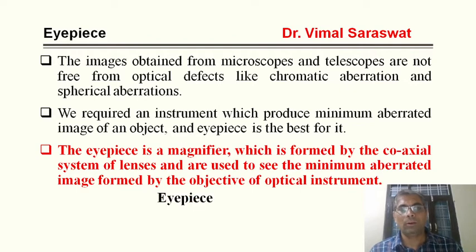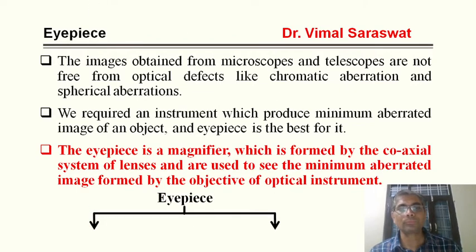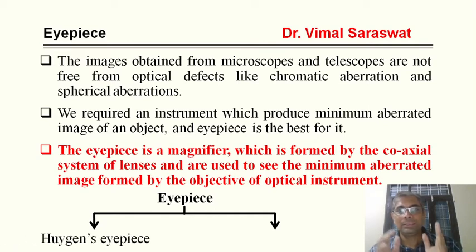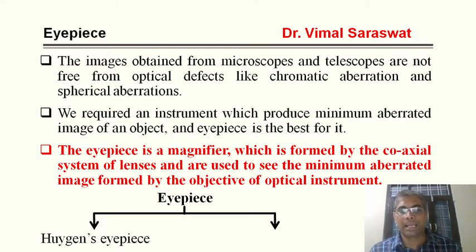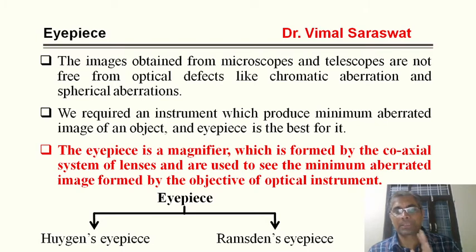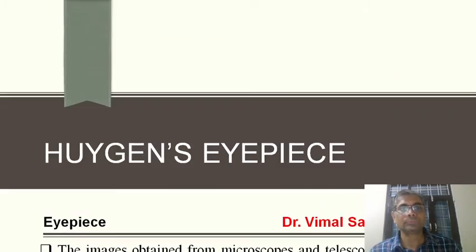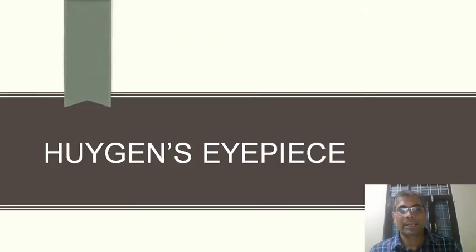Now, types of eyepiece. In our syllabus, there are two types of eyepiece: the first one is Huygens' eyepiece and another one is Ramsden's eyepiece. Here we will discuss Huygens' eyepiece.